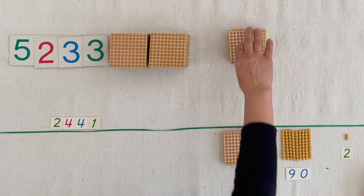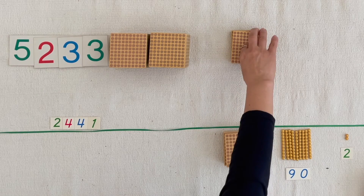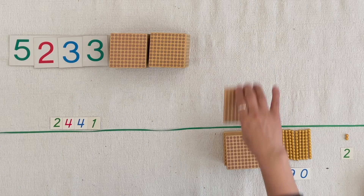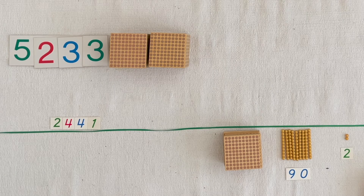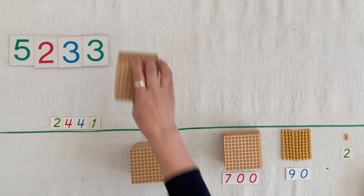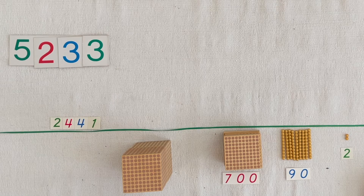One hundred, two hundreds, three hundreds, four hundreds, five hundreds, six hundreds, seven hundreds. Lina, can you bring seven hundreds from the small numerals? One thousand, two thousands. Johan, can you bring two thousands from the small numerals?